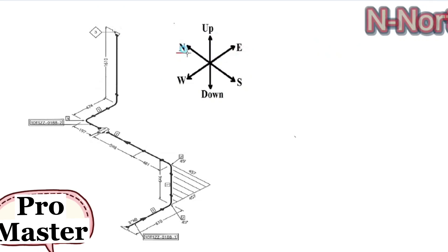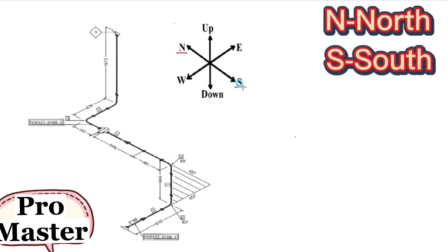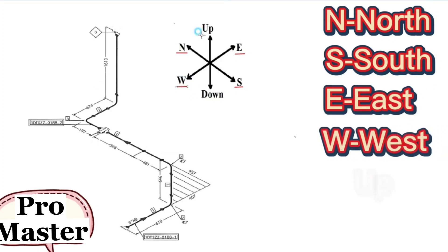N means north. S means south. E means east. W means west. Up means up. Down means down directions.